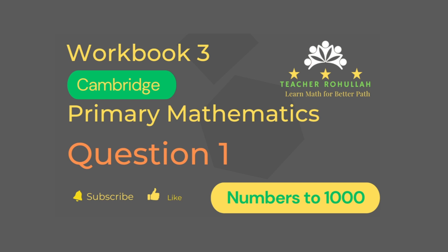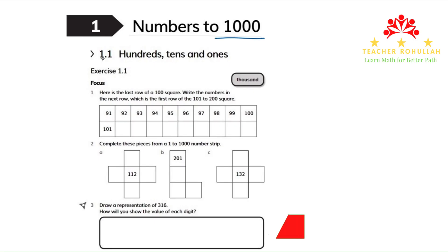Let's now move to the question and solve it. In the first question it says here is the last row of a 100 square, write the numbers in the next row which is in the first row of a 1 to 200 square.